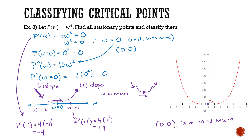That's the first derivative test — what we do when our second derivative test is inconclusive. So that's it for the classification of critical points. After the knowledge checks, we're going to look at some applications of this, doing what we refer to as optimization.